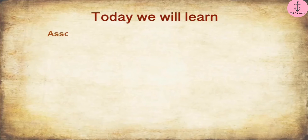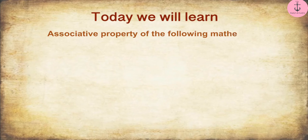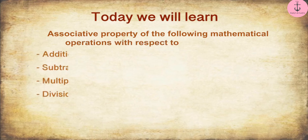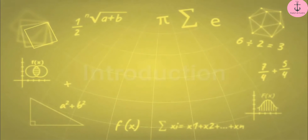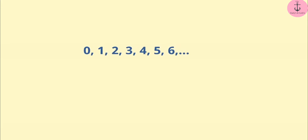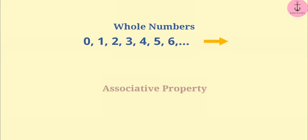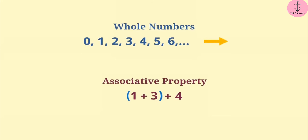Today, we will learn about the associative property of the following mathematical operations with respect to whole numbers. We have read that numbers from 0 to infinity are called whole numbers. Associative property helps us to solve mathematical operations by grouping the numbers. Let's understand it in detail.